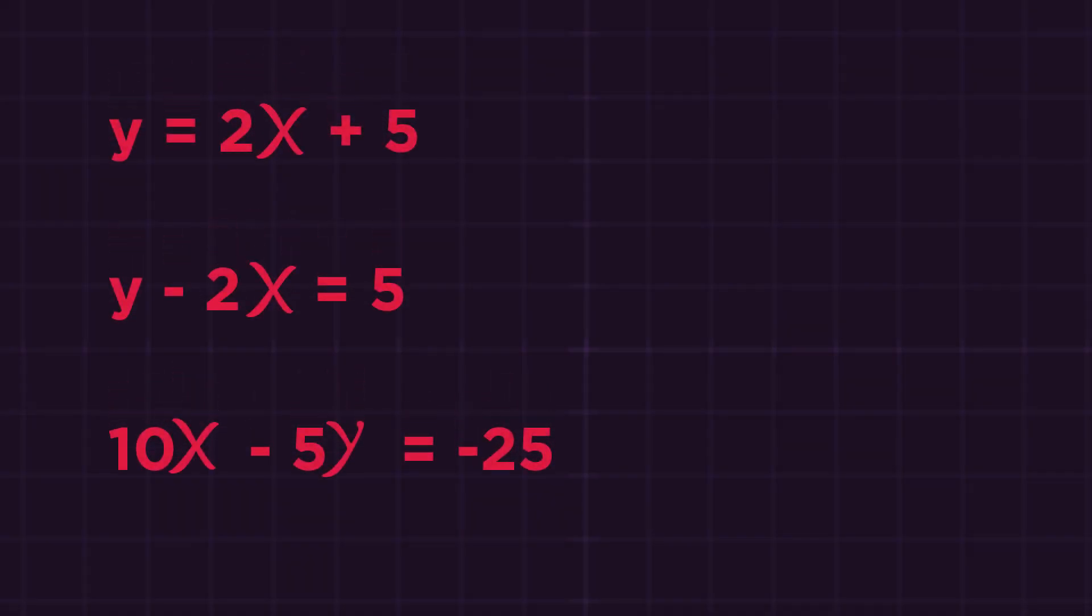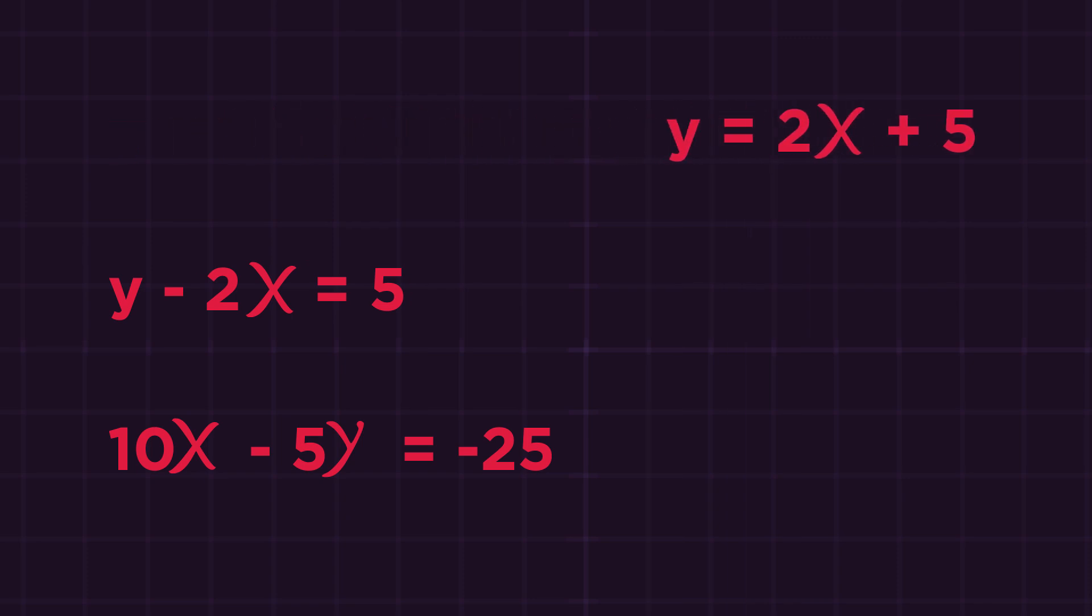These are actually all the same straight line. But only the y equals 2x plus 5 format easily tells us that the gradient is 2 and the y-intercept is 5.